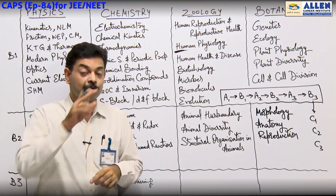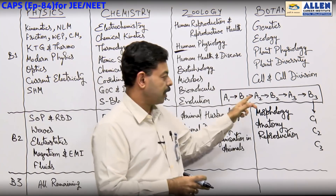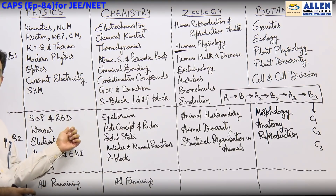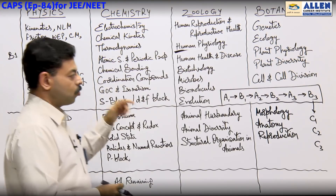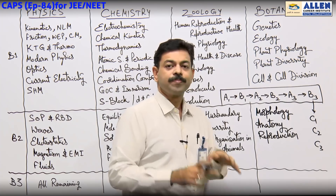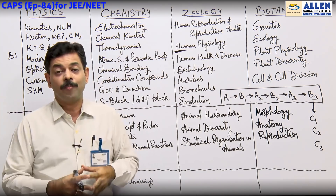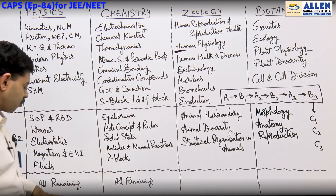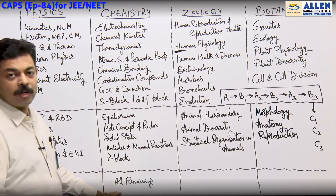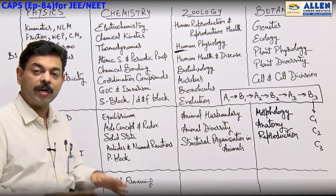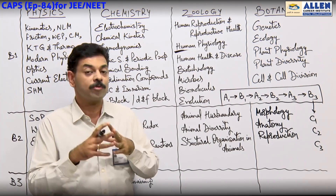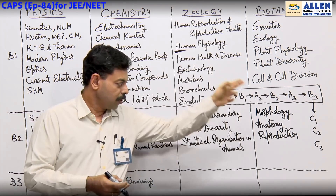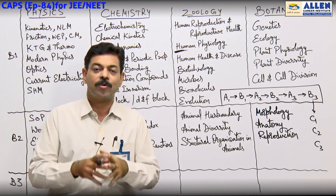After B1, the C-marked topics are left for now. Then come to A2 and B2 — meaning Block 2 topics with A and B markings should be covered. After that, A3 and B3 — meaning A and B marked topics in Block 3. In Physics and Chemistry, if there's marking there, use it; otherwise skip. Last of all, cover C1, C2, C3. Follow the same sequence and nomenclature for Chemistry, Zoology, and Botany.